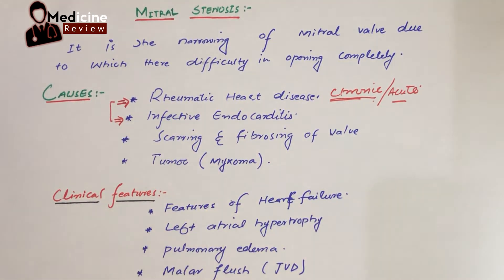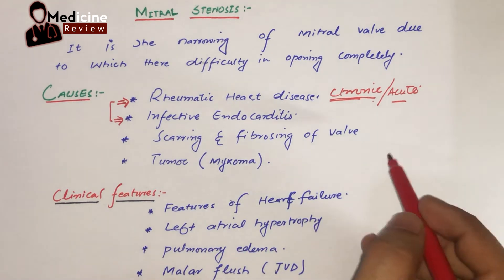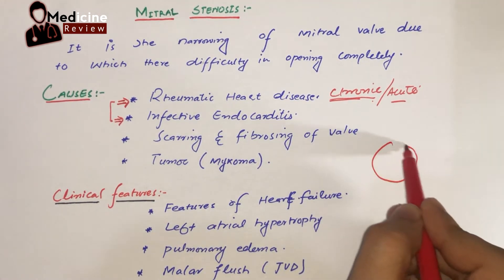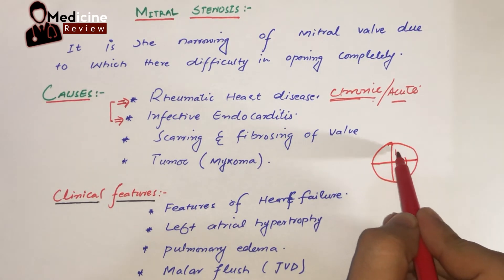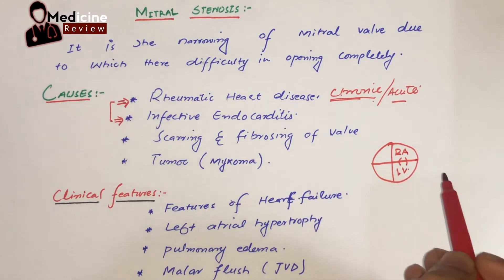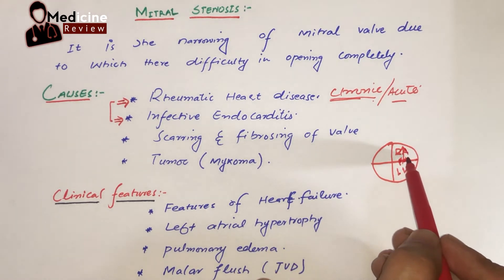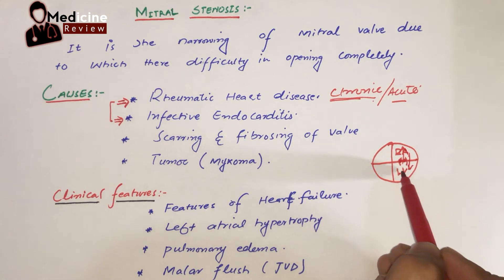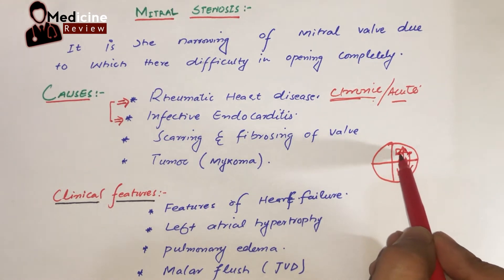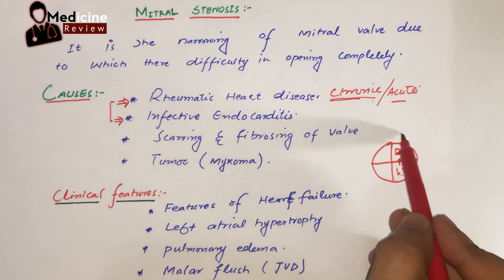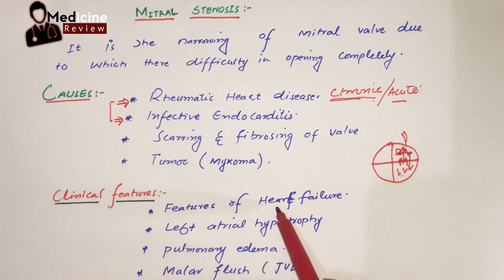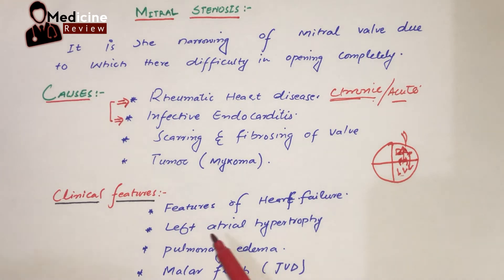For exam purposes, you should remember chronic rheumatic heart disease and infective endocarditis as the main causes, with chronic rheumatic heart disease being the most common. Looking at the clinical features: if the mitral valve is stenosed, blood cannot be pumped forward to the left ventricle, leading to accumulation of blood in the left atrium. This increased pressure leads to congestive heart failure, reduced cardiac output, edema, and ascites.